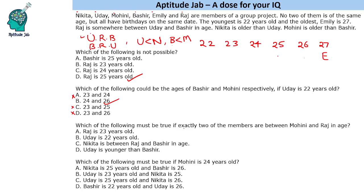The next question asks: which of the following must be true if exactly two of the members are between Mohini and Raj in age? We know Mohini is older than Bashir. If Bashir is older than Raj, then Mohini is above that and there must be two people between them — it could be Bashir and one other person. In another case, one of those two people between Mohini and Raj is Udaya, and one other person will be placed in the remaining spot.